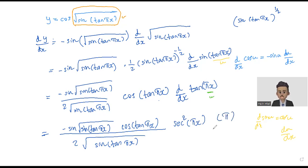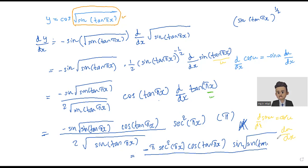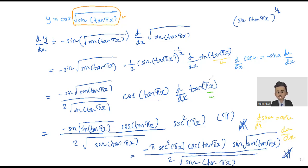This is where we find the answer. You can also rewrite it to make it easier to read — you can put the number to the front. So the final answer is: minus π · sec²(πs) · cos(tan(πs)) · sin(√(sin(tan(πs)))) over 2 times square root of sine tangent πs. That will be my final answer. Thank you, see you in the next video.